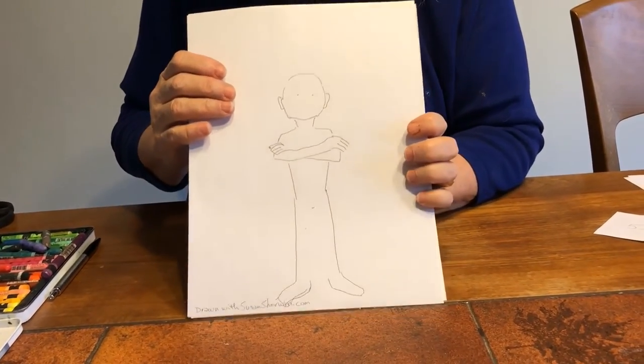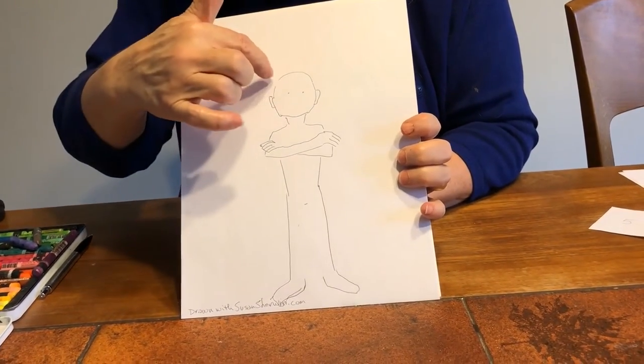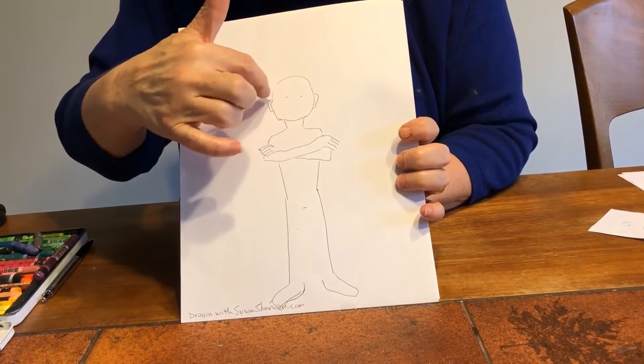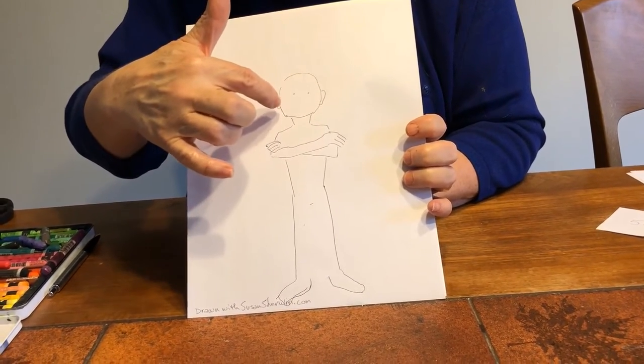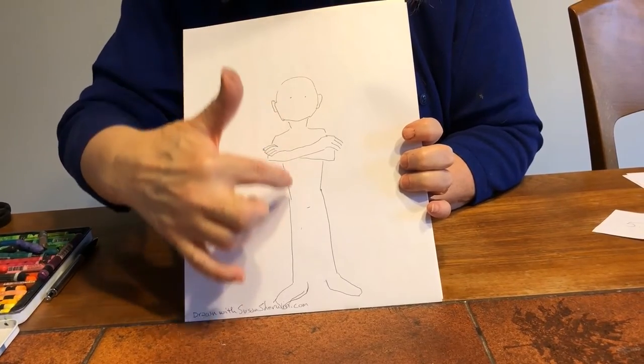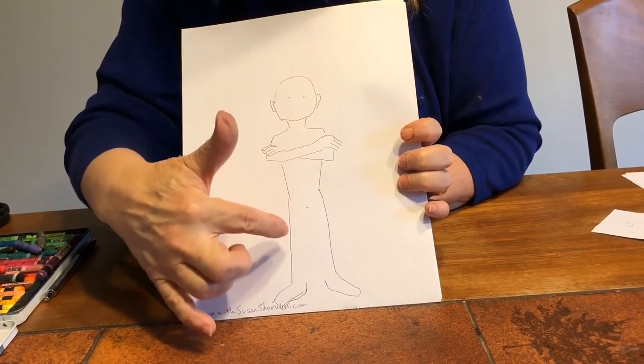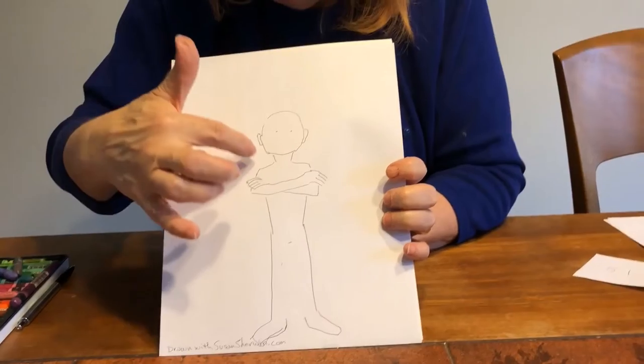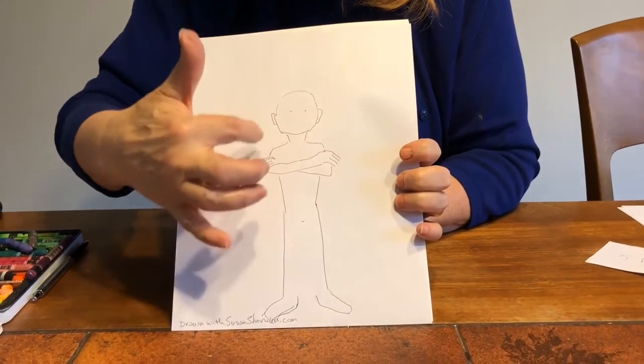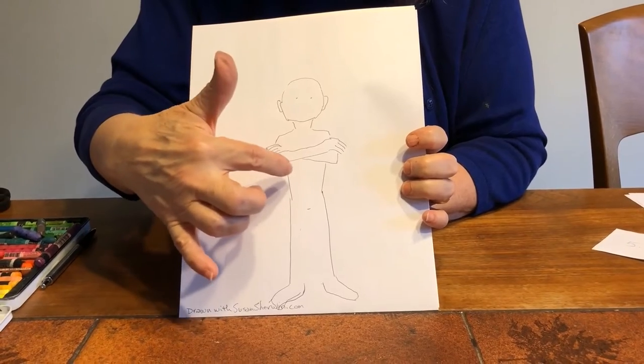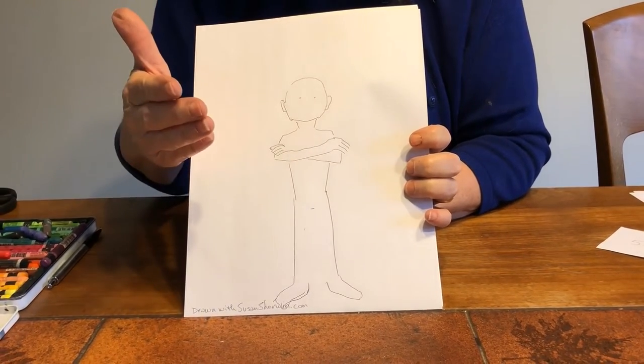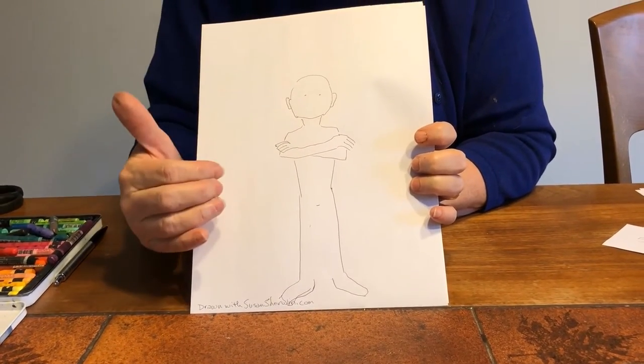So you're going to want to address a few things. You're going to want to do something on the head. You're going to want to do some kind of mask or goggles. You're going to want to do a superhero outfit, which is usually tight. It might have a cape. It might have gloves. It might have a utility belt. It probably has some weapons. So see what you can come up with.